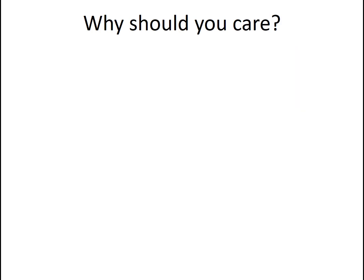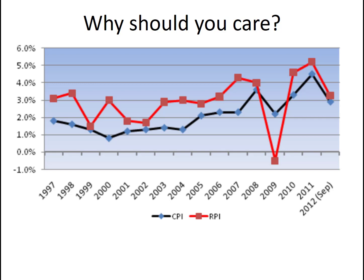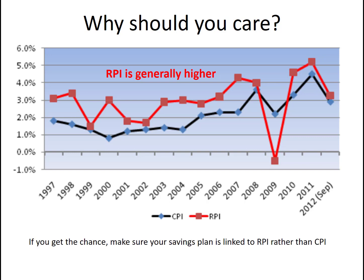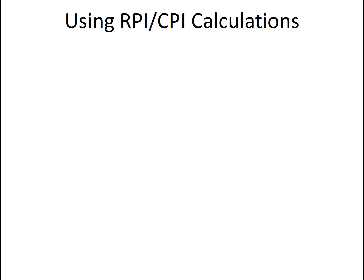So they are slightly different — which begs the next question: why should you care? Well, there's one very important reason. Here are the graphs for CPI and RPI, and you will notice that RPI is generally higher. So if you have a savings plan or a pension and you have the choice of having it linked to CPI or RPI, choose RPI — because it'll generally give you a better return. It is, however, really important for you to be able to carry out RPI and CPI calculations, because for a start it helps you make sense of what your savings are worth.